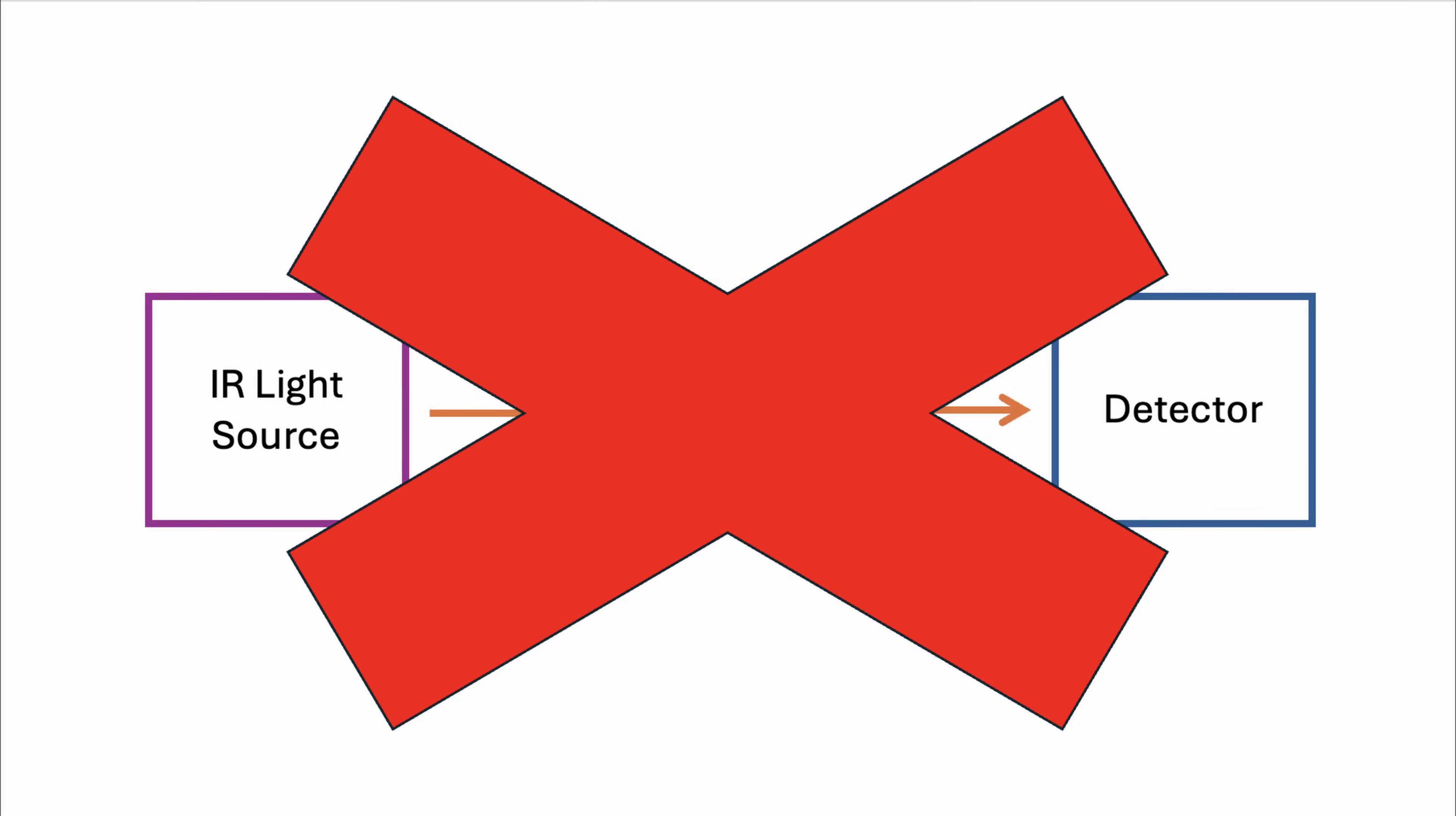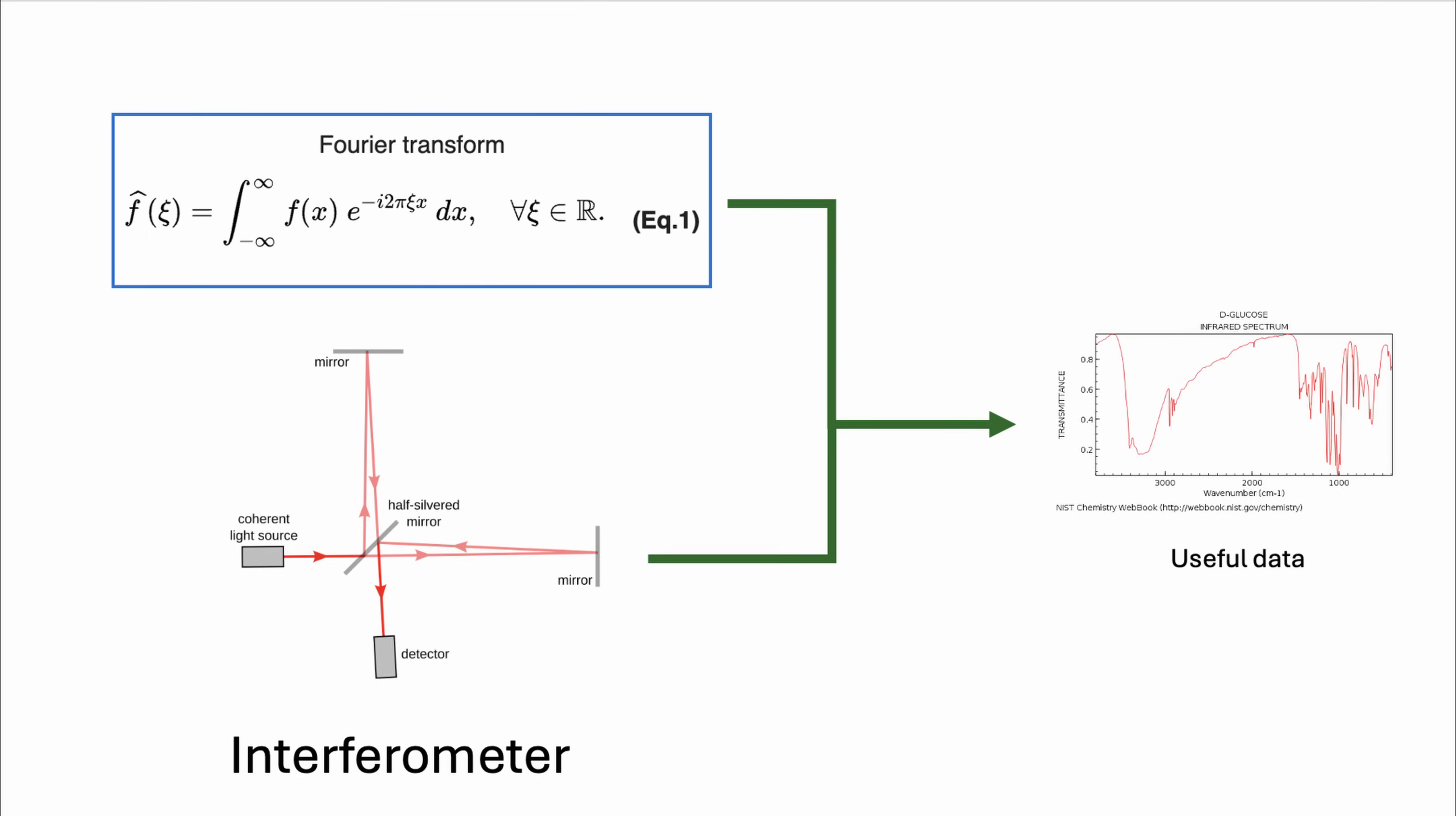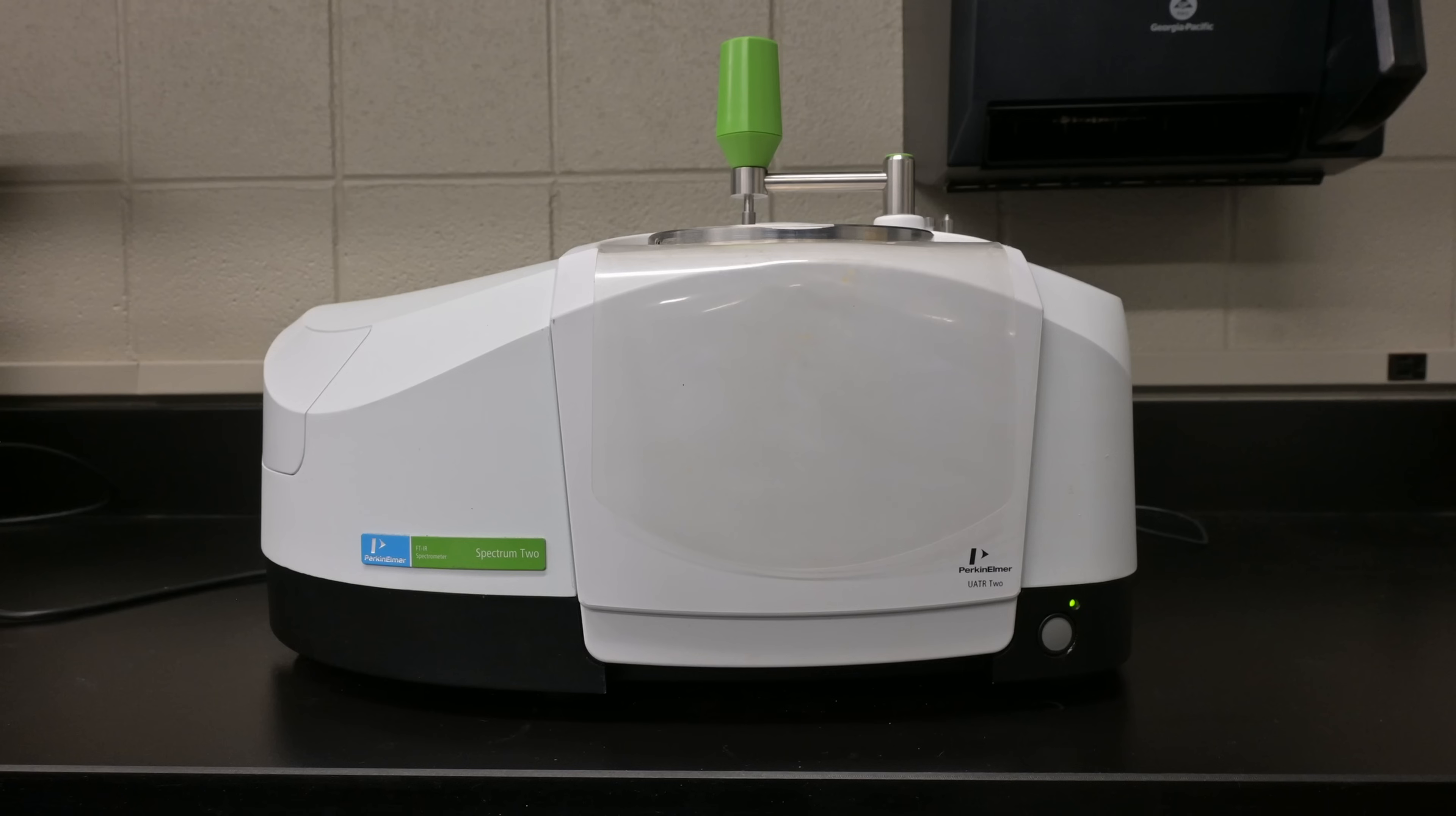But here's the twist. Just measuring the light that comes through isn't enough. We need to know exactly which wavelengths disappeared. That's where the Fourier transform comes in, and a device called an interferometer comes in. It's like a mathematical decoder that helps us translate those missing pieces into a full spectrum. From there, scientists can identify which kinds of bonds are in the sample, and often what's the sample's made of. With that rough overview done, we can now dive deeper into the parts of the instrument.